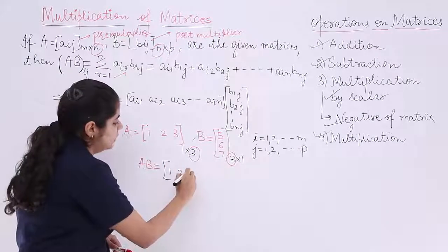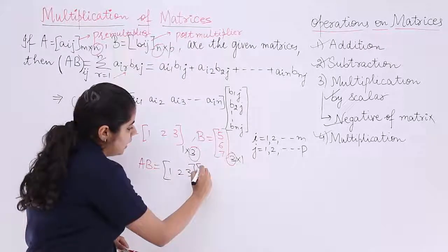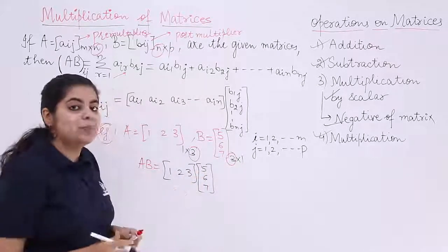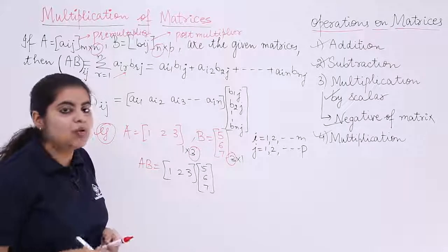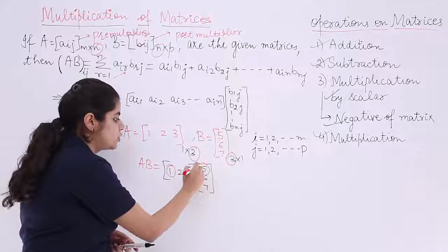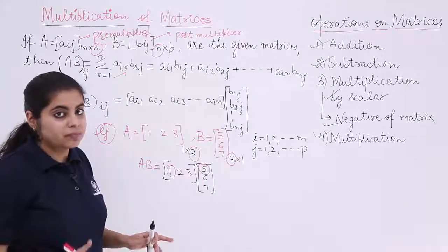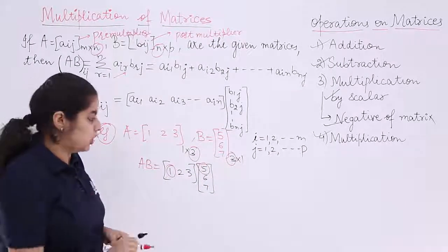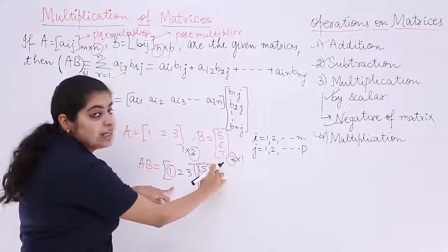Now what I do is I write the first matrix, I write the second matrix and I have to basically multiply them. How do we do this? We take first row, first column, first element, first row, first column. So that is 1 into 5.